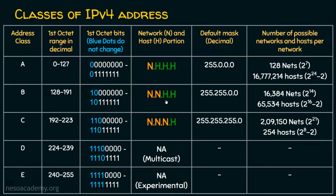Let's start with classful addressing. We know there are five classes in IPv4: class A, B, C, D, and E. Class D is for multicast and class E is for experimental and research purposes, leaving only class A, B, and C for general usage. Classful addressing wastes IP addresses, which is why we are migrating to classless addressing.